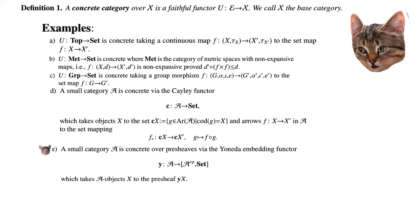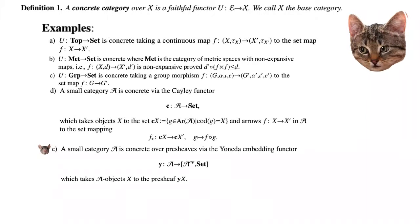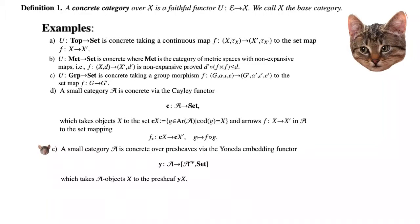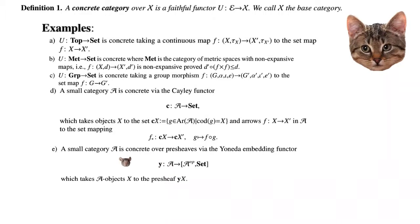Another example, much more categorical: if you have a small category A, it is concrete over presheaves via the Yoneda embedding functor Y: A → presheaves on A. This takes an object X in A to the presheaf Y(X).